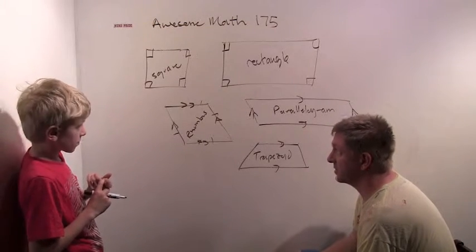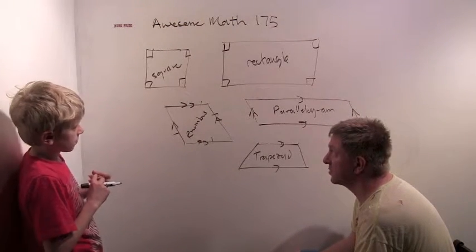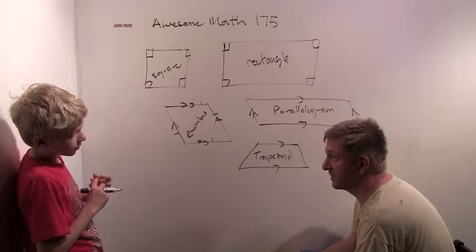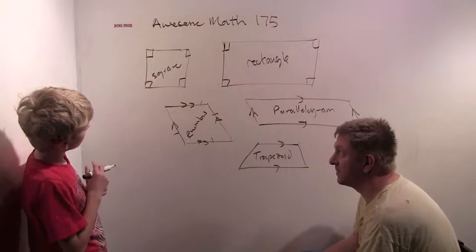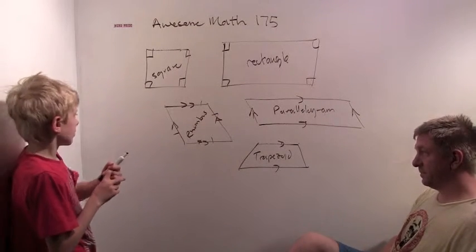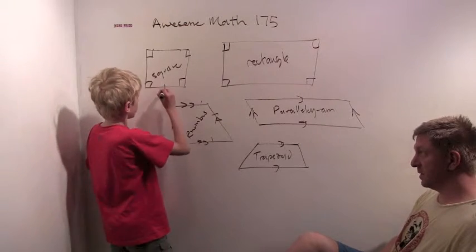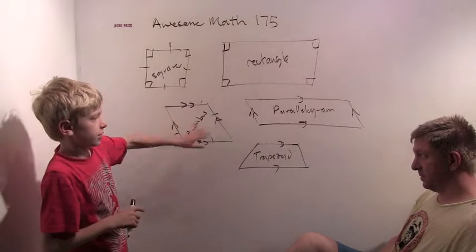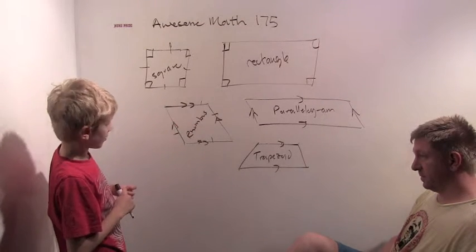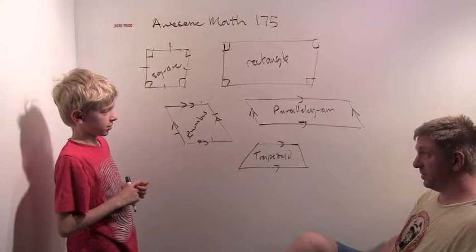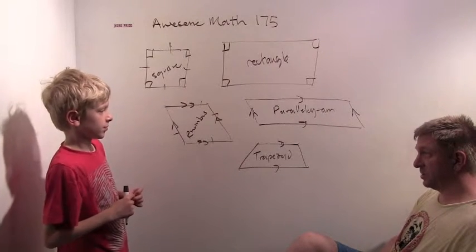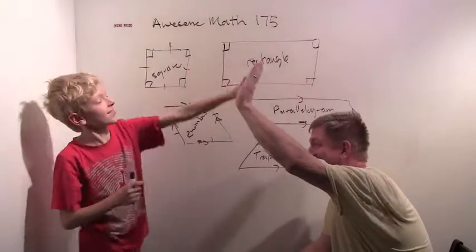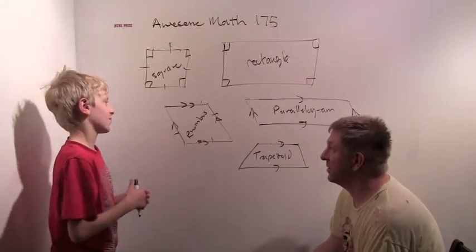Let me ask you a question. Is a square a rhombus — always, sometimes, or never? Well, a square has four sides that are equal, and a rhombus has four sides that are equal, so I think a square is always a rhombus. The judges approve — a square is always a rhombus.